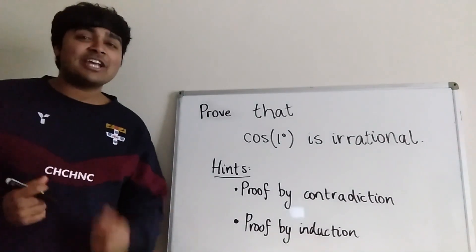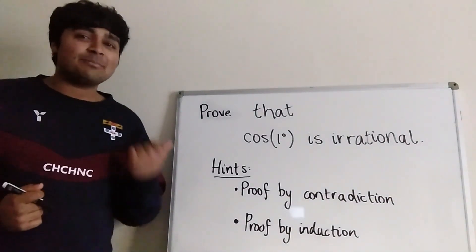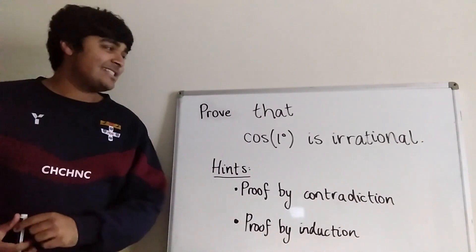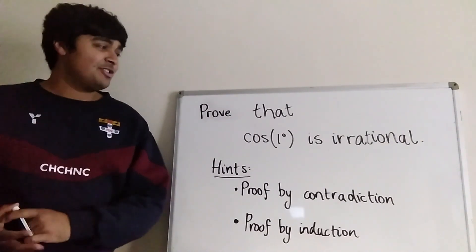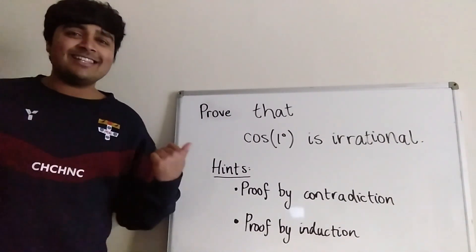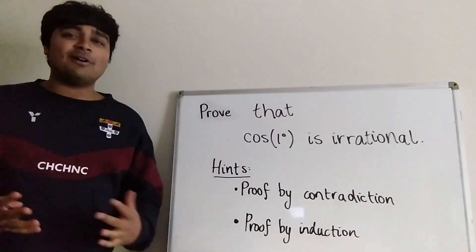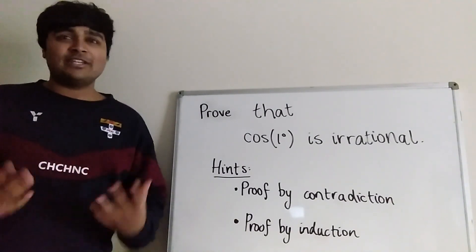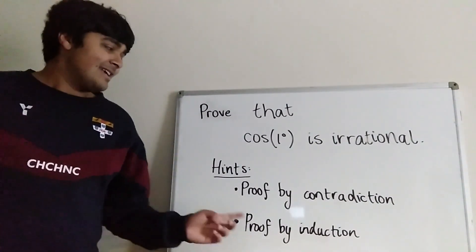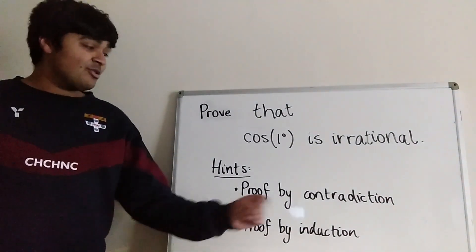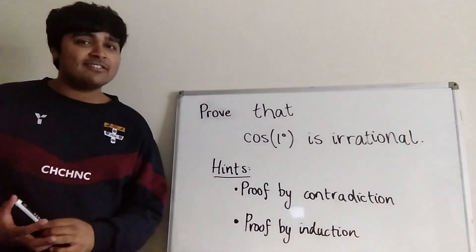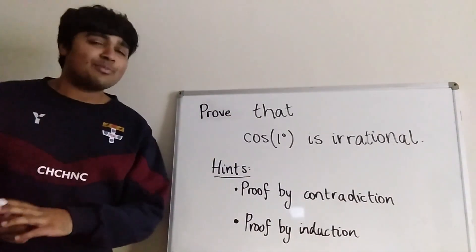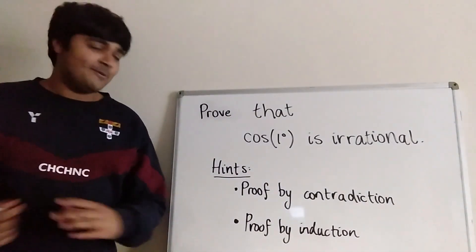Hi, thanks for joining me. Today I'm going to share a really slick proof with you. We want to prove that cosine of one degree is irrational. The reason this is a slick proof is because it combines two really commonly used methods of proof in maths: proof by contradiction and proof by induction. So we're going to be using both of those to prove cosine of one degree is irrational.